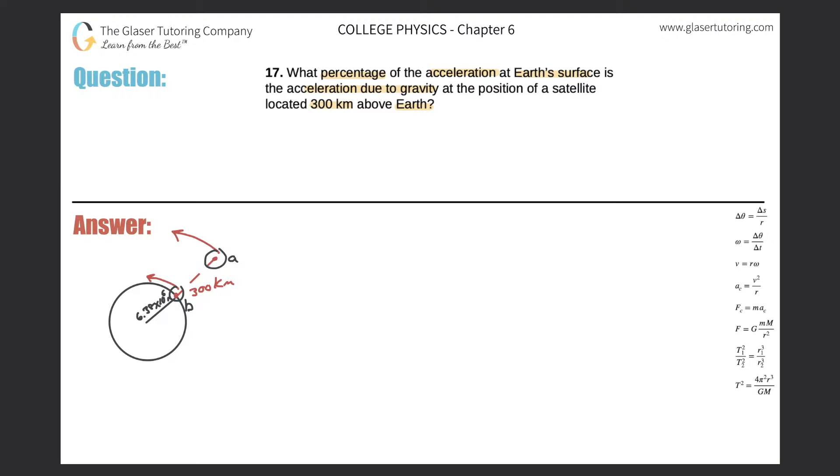Now, they want to find the percentage of A against B, or meaning it says percentage of the acceleration of the Earth's surface compared to that of the acceleration due to gravity at the position of the satellite located 300 kilometers above Earth. So I'm going to frame this problem as basically percentages are fractions multiplied by 100. So I'm just going to do this whole problem as a fraction and then at the end multiply it by 100. So I'm trying to find this: the acceleration at point A as a fraction of the acceleration at point B.